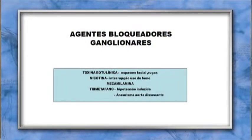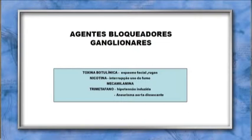Nos gânglios da sinapse colinérgica, as drogas que podem agir incluem a toxina botulínica — usada em espasmo facial e rugas — a nicotina, utilizada clinicamente para interromper o uso do tabaco, a mecamilamina e o trimetafano, que levam à hipotensão induzida e, segundo a literatura, são úteis no aneurisma dissecante de aorta.